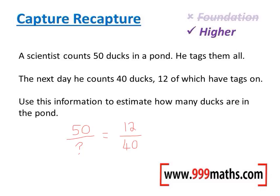I can use any mathematical method to solve this now. I may multiply the left hand side by 40 and then divide by 12, or think about it as equivalent fractions, or as a percentage. I'm going to think about this one as a percentage. Now 12 out of 40 is the same as 30%, because 4 out of 40 would be 10%, 8 would be 20%, and 12 would be 30%.